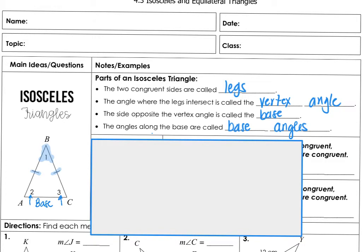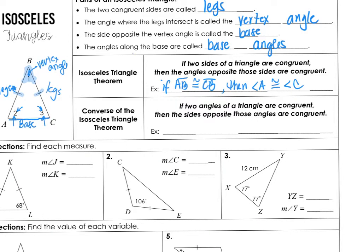So we've got legs, the vertex angle, and then your base — which is the side opposite the vertex angle — and then your base angles. We've got two theorems here. First is the isosceles triangle theorem, which states: if two sides of a triangle are congruent, then the angles opposite those sides are congruent.